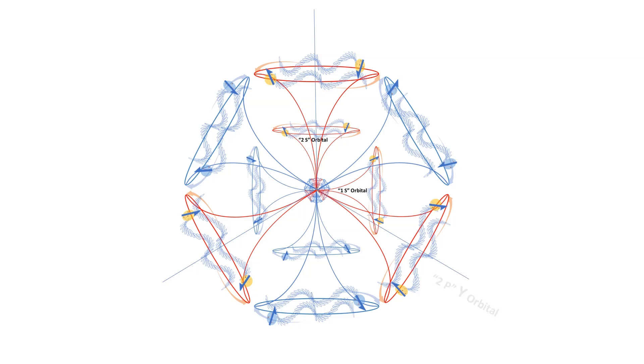To distinguish these orbitals, we assign separate labels to each, each associated with a linear axis. For the 2p orbitals, they are identified as 2px, 2py, and 2pz.